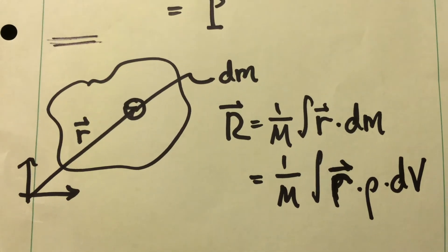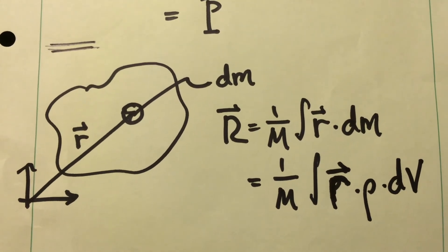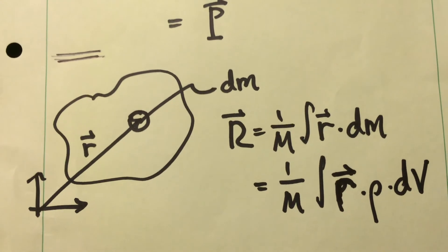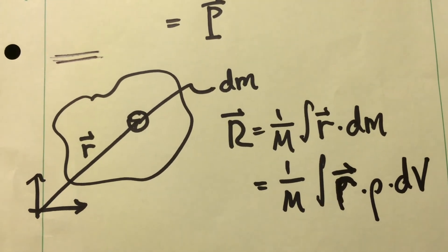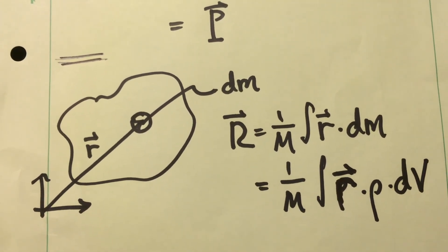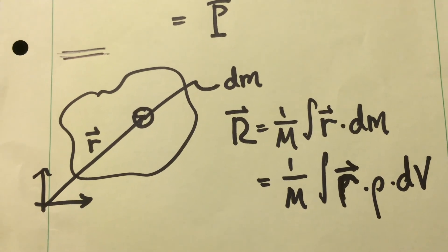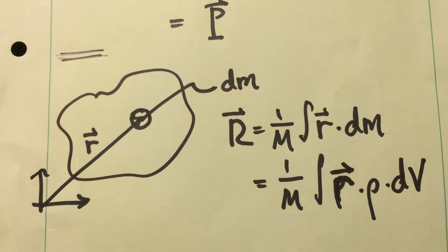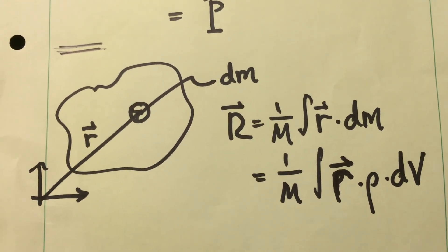Now, of course, not all objects are made up of discrete particles. We might have actual extended objects. In that case, if we're going to calculate the center of mass for the extended objects, we'll basically break it up into infinitesimal pieces and then calculate the center of mass for the system by considering the center of mass for each individual little infinitesimal piece.